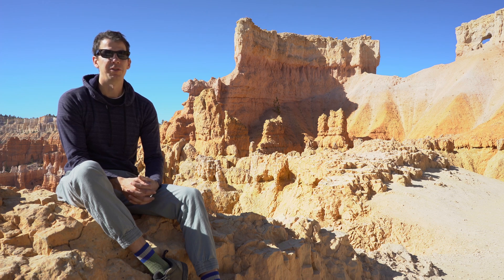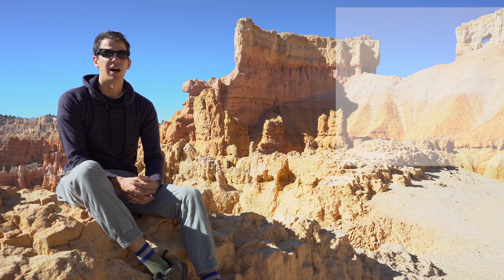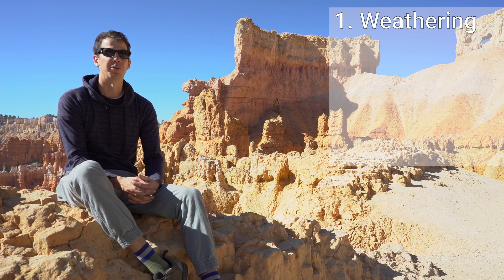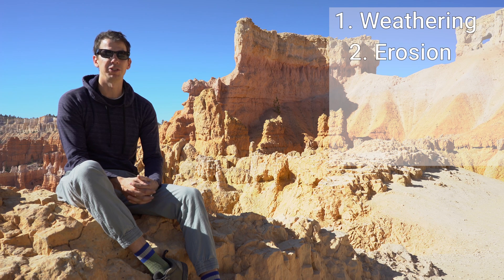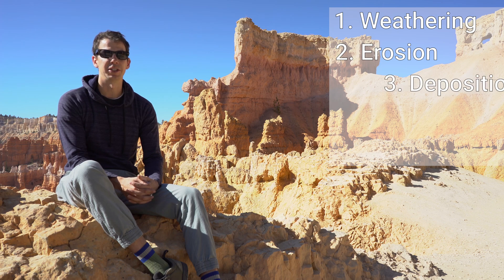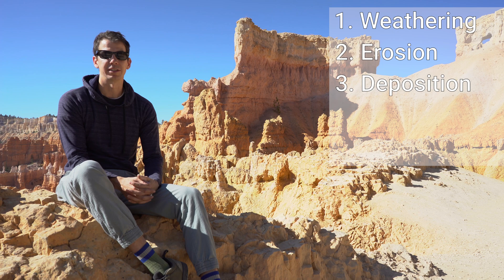The sedimentary process is a five-step process. The first step is weathering, where the rocks are broken down into smaller pieces. The second step is erosion, where those fragments or pieces are then transported or removed from their original location. The third step is deposition, and that's where those pieces come to rest.